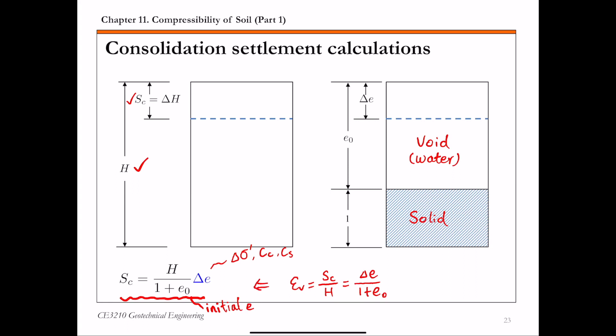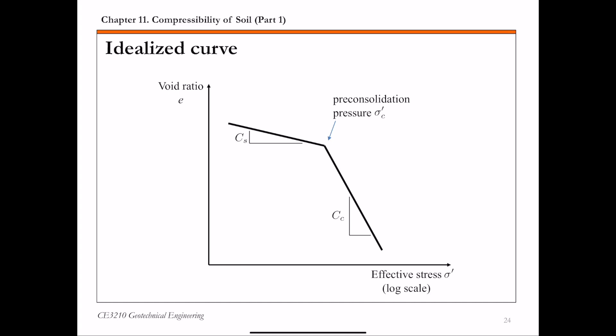The key in this primary consolidation calculation is to find the void ratio change delta E due to effective stress change delta sigma prime. To illustrate how we get the change in void ratio delta E due to the change in effective stress delta sigma, I'm going to use this idealized curve from 1D consolidation test results.